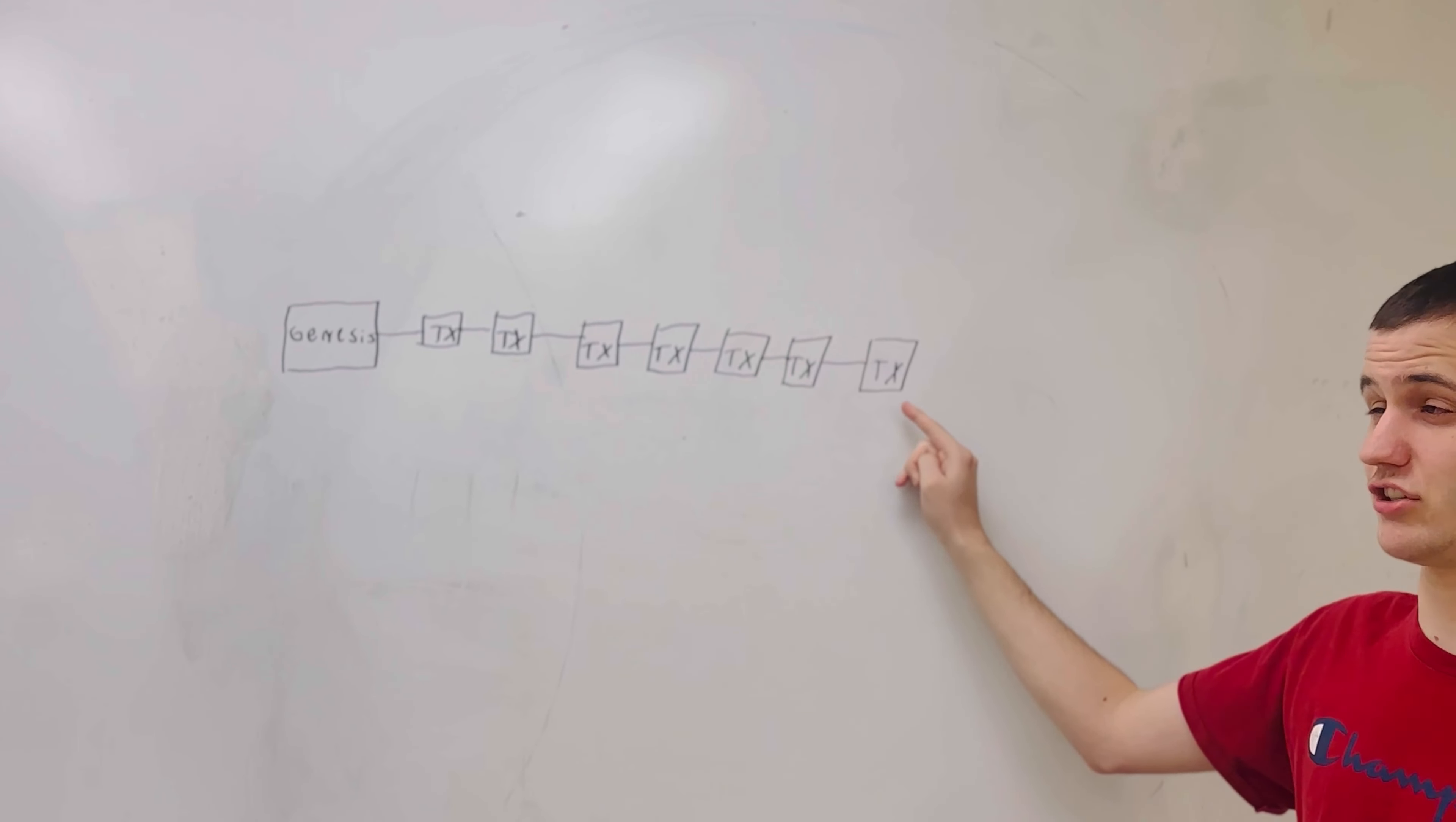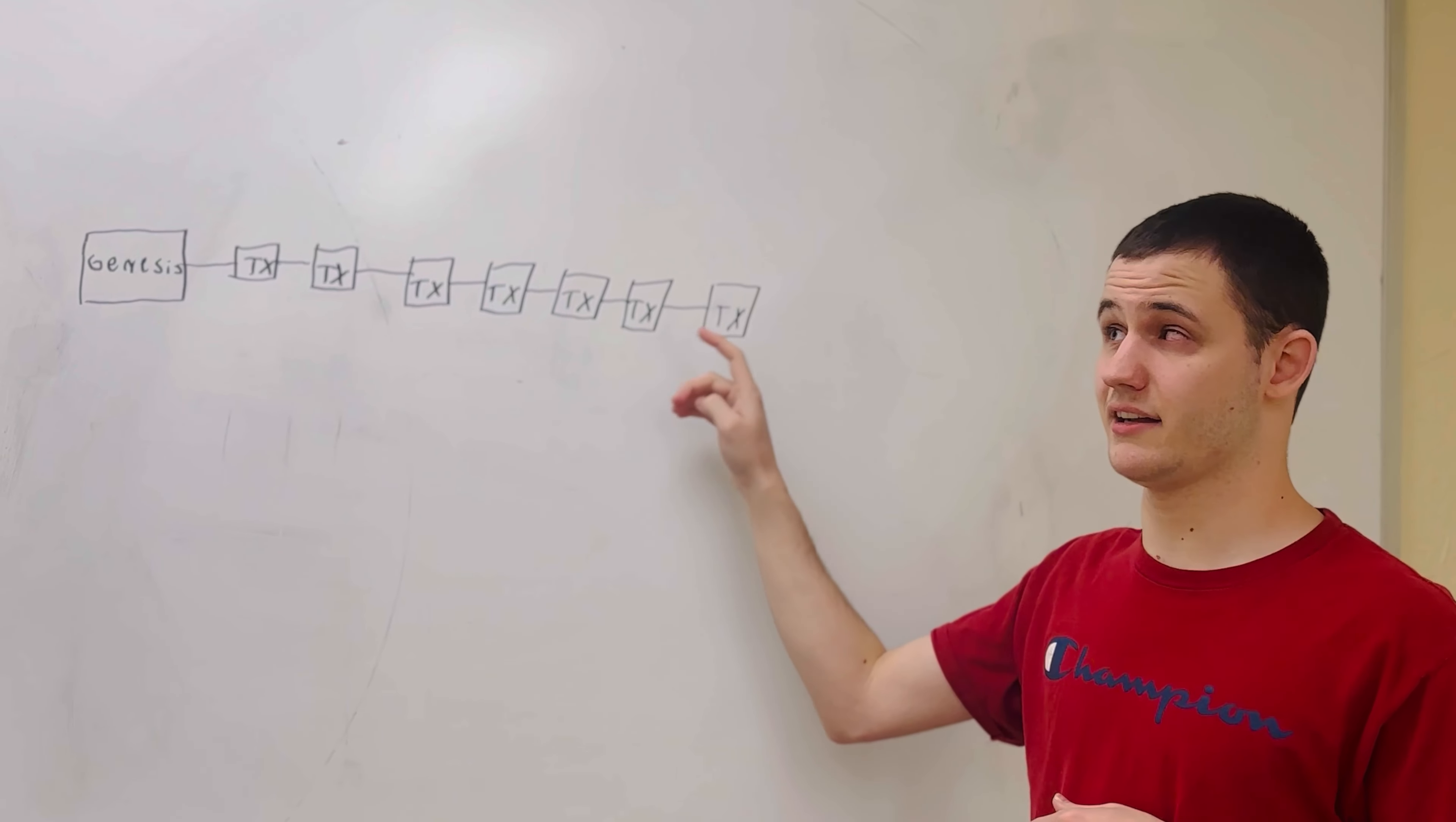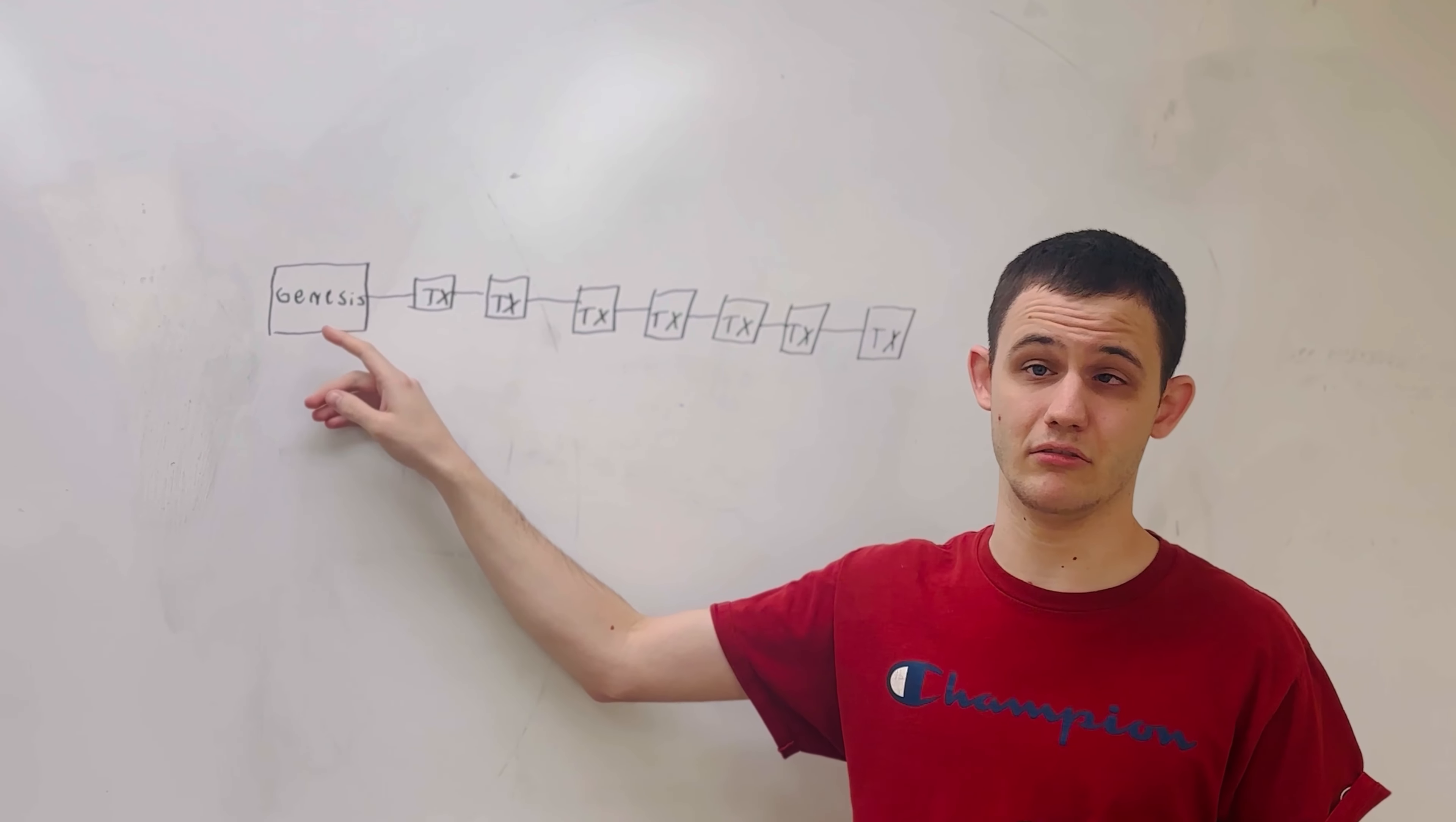And I put problem kind of in air quotes because I don't know if it's a problem. I don't think it is in all cases. Sometimes you have to think of it like a problem, but other times we can start to think more nuanced and critically about what this actually means. In effect, for Bob to know that Alice sent him a valid token, he has to check this transaction, all the way back to when the token was created.